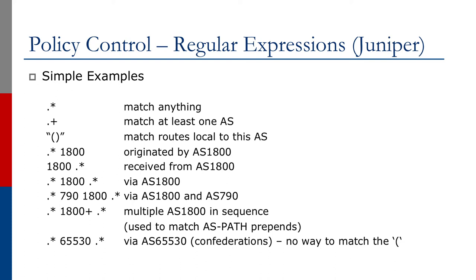To match anything originated by AS 1800, you have the dot star followed by a space and then you have 1800. To match everything received from AS 1800, you have 1800, a space, then a dot and a star. And so on and so forth. For the last one, since we do not match individual characters, you do not need to match the brackets. So to match AS 65530 inside a confederation, you just have dot star, then 65530, then a space, then dot star.